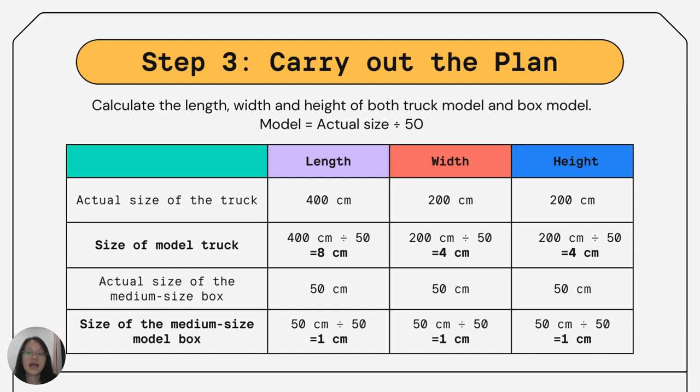After dividing the actual size by 50, we know that the length of the model truck is 8 cm and the width and height are 4 cm. Also, the size of the medium-sized model box is 1 cubic cm.